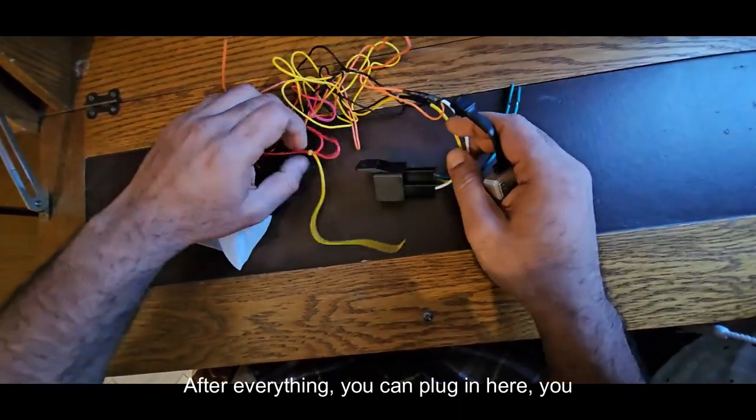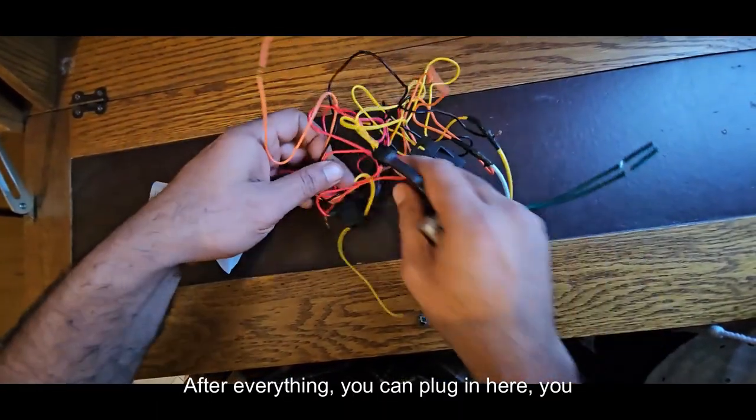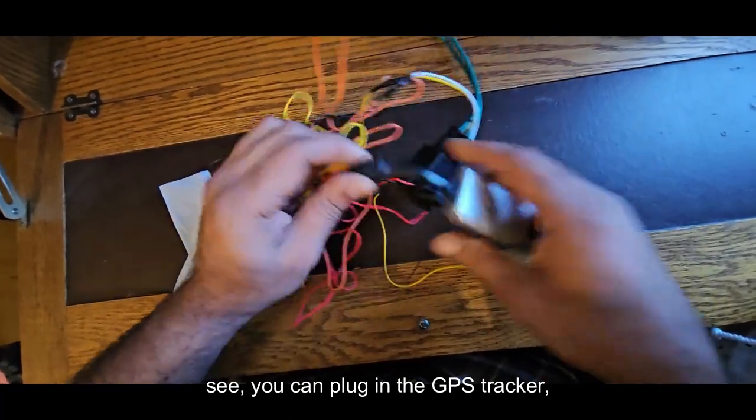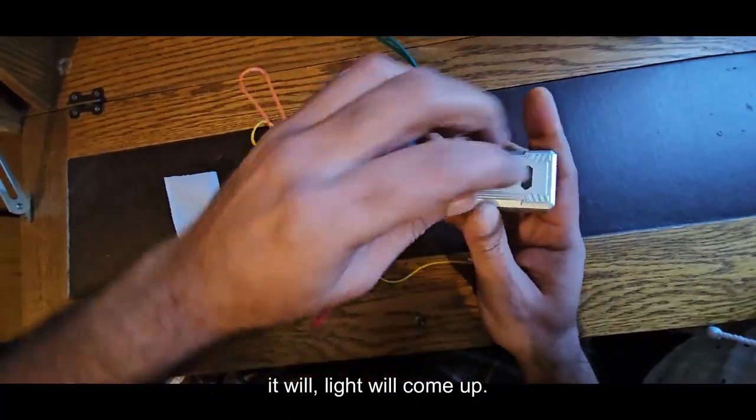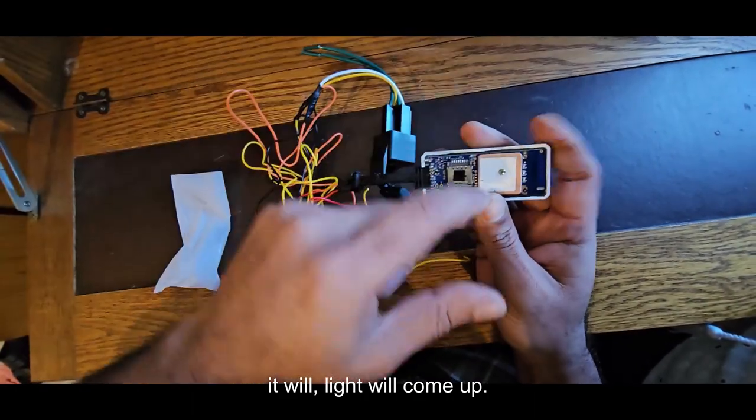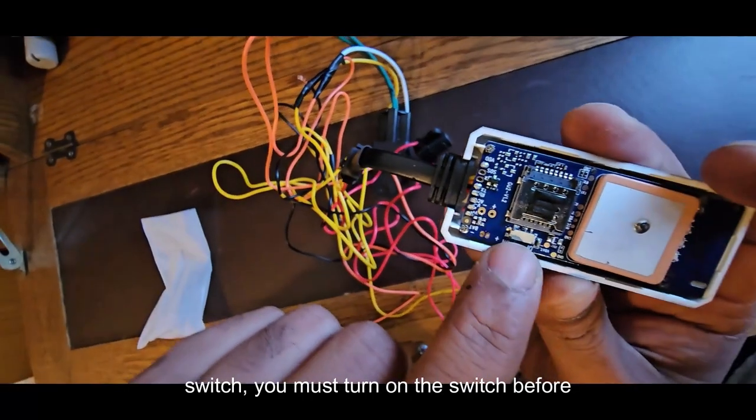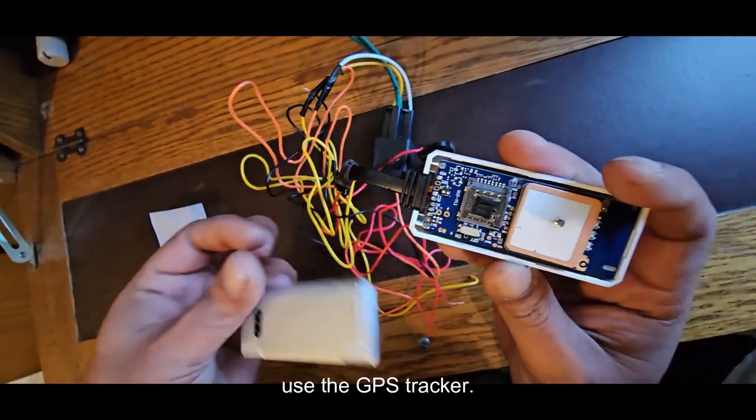After everything, you can plug it in here. You can plug in the GPS tracker. The light will come up. There is a switch. You see the on-off switch. You must turn on the switch before using the GPS tracker.